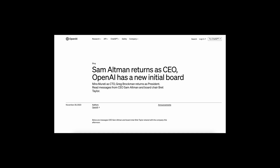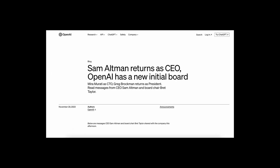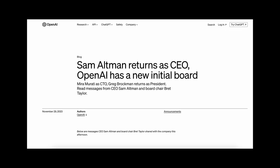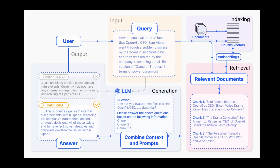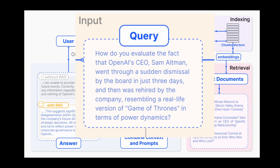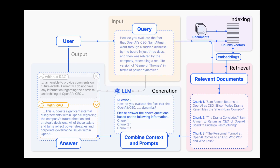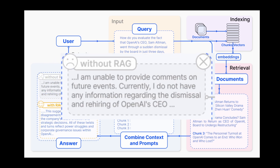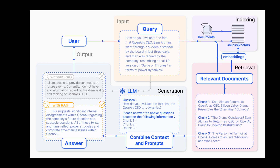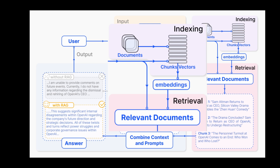Now let's look at an example to understand the simple RAG workflow. Let's consider the well-known Sam Altman story of his dismissal and reinstatement from OpenAI as CEO. The user asks: 'How do you evaluate the fact that OpenAI CEO Sam Altman went through a sudden dismissal by the board in just three days and then was rehired by the company, resembling a real-life version of Game of Thrones in terms of power dynamics?' Without RAG, the model responds: 'I'm unable to provide comments on future events. Currently I do not have any information regarding the dismissal and rehiring of OpenAI CEO,' which is totally fair. But with RAG, we gather all documents and news articles related to the story, then chunk them, embed them, and store them in the vector DB.